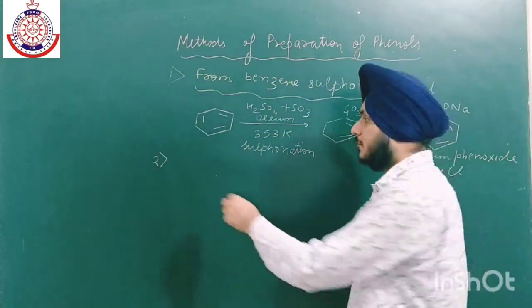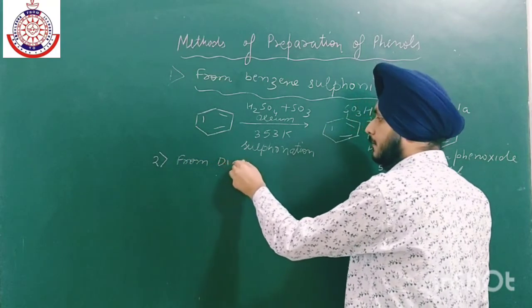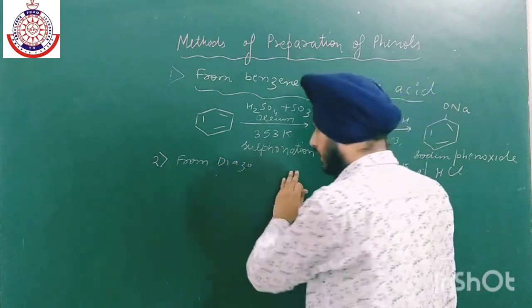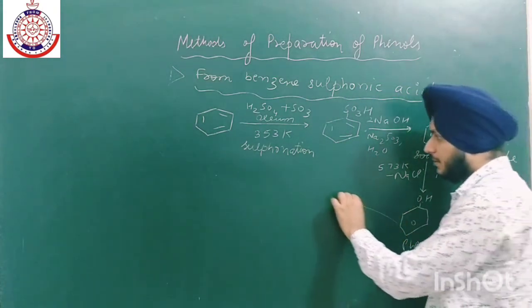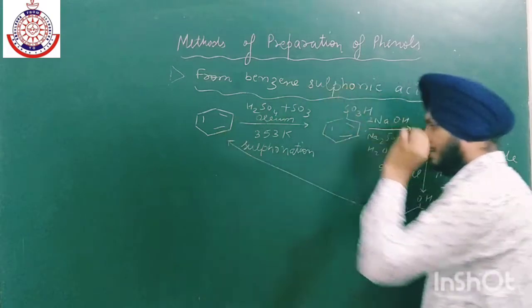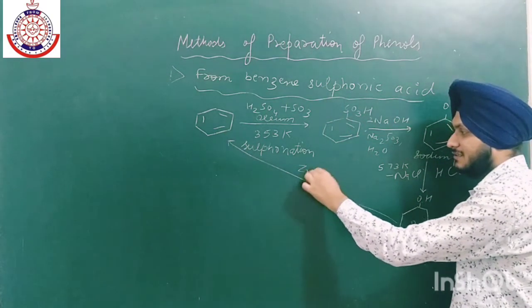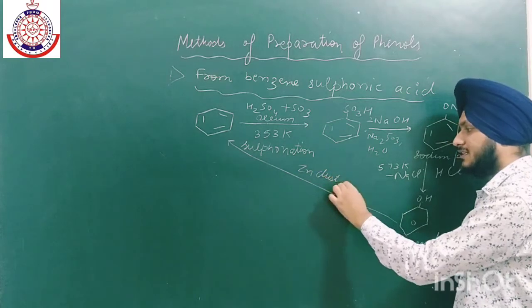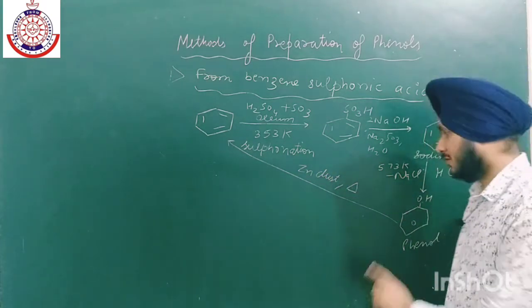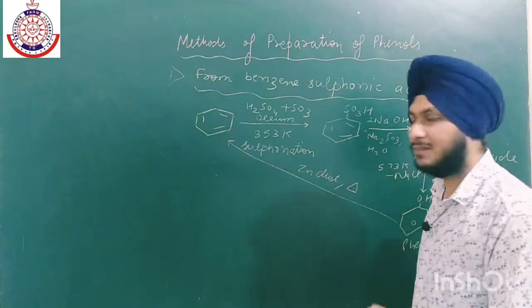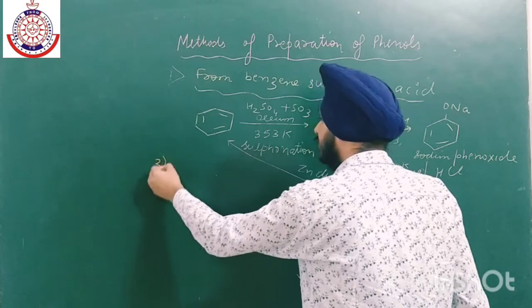The second method is from diazonium salt, which is a very efficient method. One additional point: we can directly convert phenol into benzene by reaction with zinc dust and heat. We will discuss that in the chemical properties of phenol later.